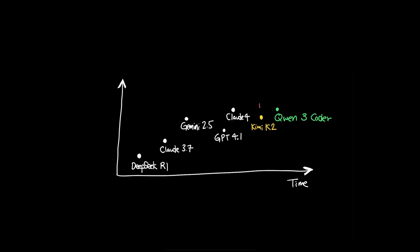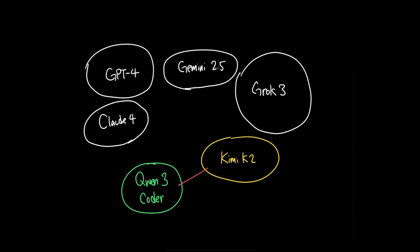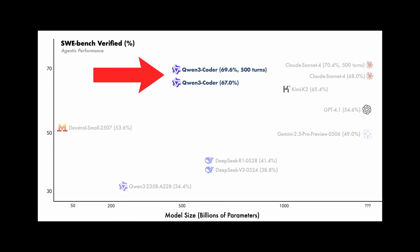Quen3 Coder took the spotlight that Kimi-K2 enjoyed for merely 13 days. Quen3 Coder is not only half the size of Kimi-K2, it scored even higher in coding benchmarks.